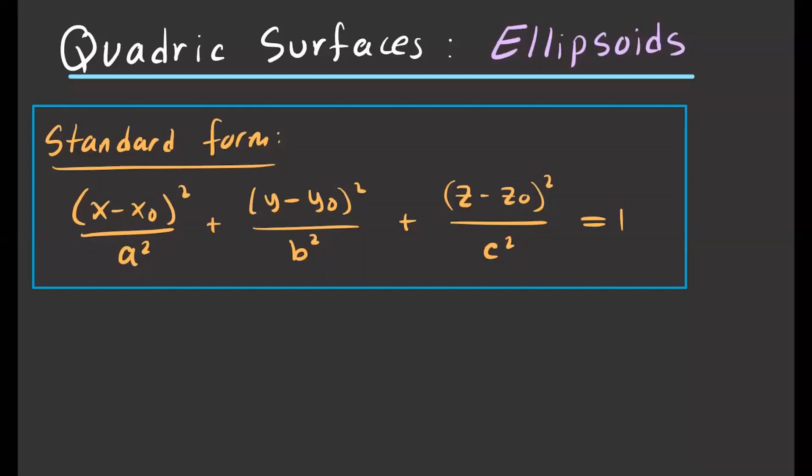In this video we're going to discuss quadric surfaces, more specifically ellipsoids. Ellipsoids are surfaces whose traces are ellipses, and because it's in 3D we call it an ellipsoid.